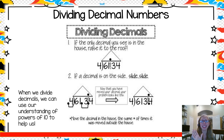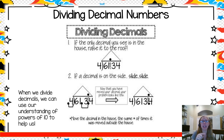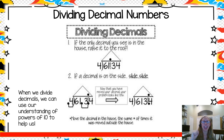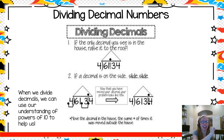Let's start off with a quick review of what we do when we have decimals in our division problem. Remember: the only decimal you see is under the house, raise it to the roof — it just goes straight on up. If the decimal's on the side, you're going to slide, slide. We always want to be able to divide by a whole number.